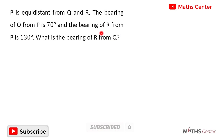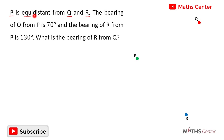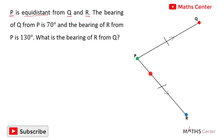Let's illustrate this information on a diagram. The three points are point P, point KL, and point R. The question tells us that P is equidistant from KL and R, meaning the distance from P to KL is the same as the distance from P to R. So the length of line PKL equals the length of line PR. We join point KL to point R to form triangle P-KL-R.